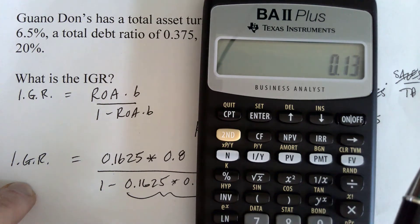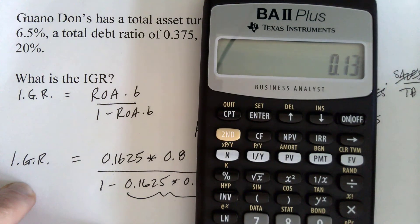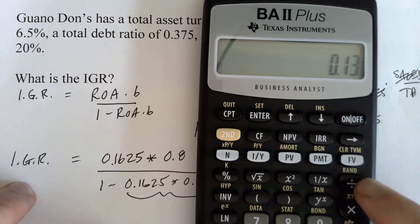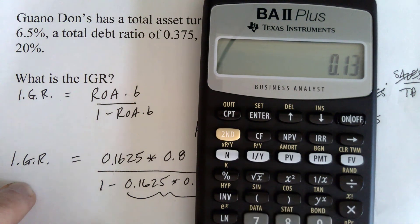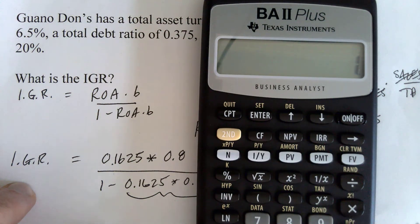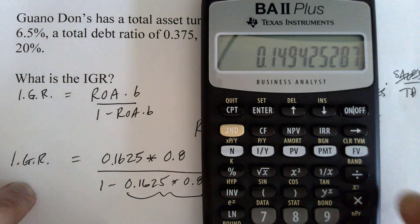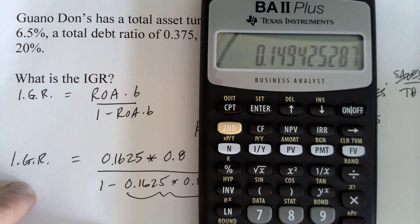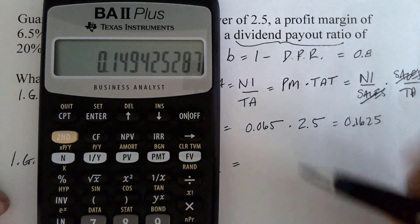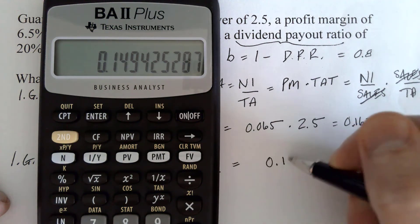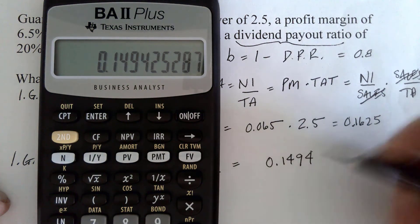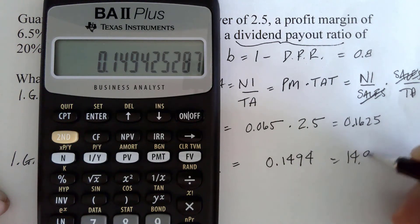So I'm going to store 1. And now I'm going to say divide by open parentheses 1 minus recall 1 equal. And that way I don't have to worry about typing things in over and over again. I don't have to worry about rounding errors and things like that. And so we're getting 0.1494 or 14.94 percent.